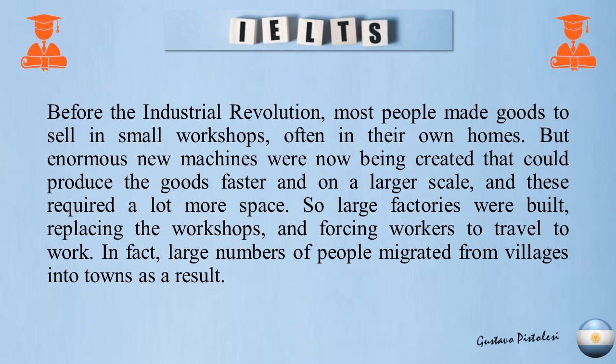Before the Industrial Revolution, most people made goods to sell in small workshops, often in their own homes. But enormous new machines were now being created that could produce goods faster and on a larger scale, and these required a lot more space. So large factories were built, replacing the workshops and forcing workers to travel to work. In fact, large numbers of people migrated from villages into towns as a result.